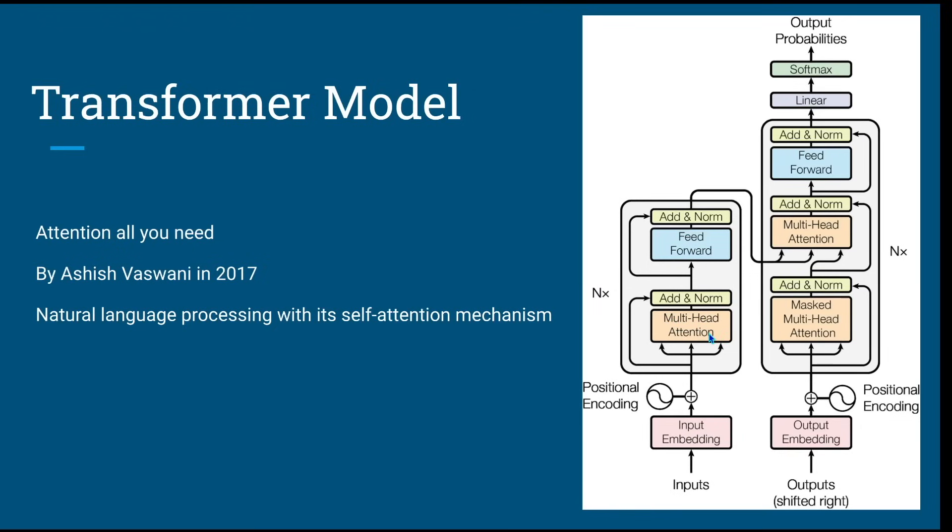We need to understand multi-head attention at three places, feed forward at two places, softmax also simple, linear transformation is also simple. And the new thing we need to adopt is the embedding, input embedding and positional encoding. So this diagram if you look as a whole is simple, not very complex.